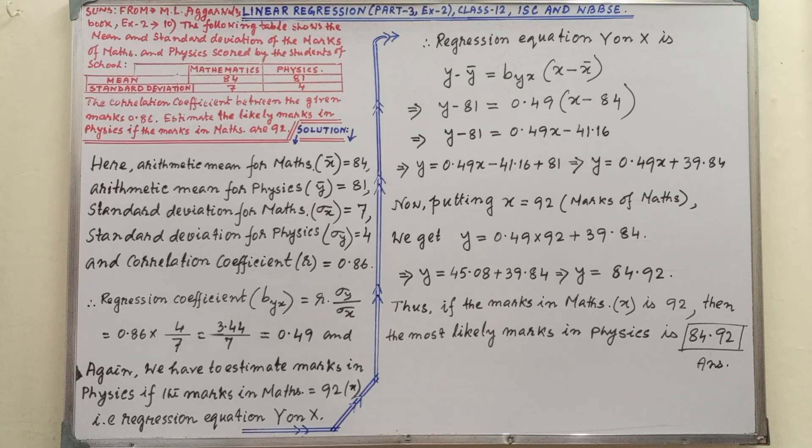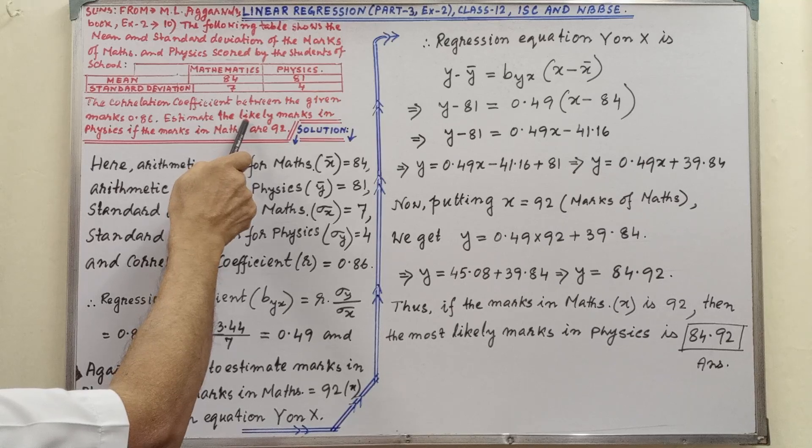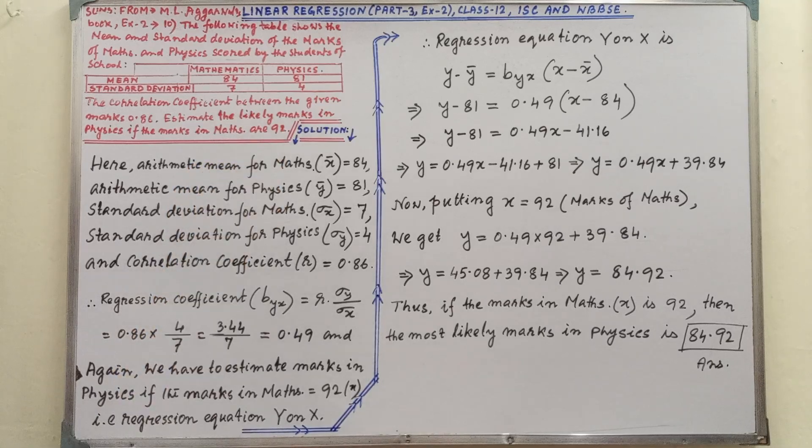Now, we have to find out and estimate the likely marks in physics if the marks in maths are 92. This is given.